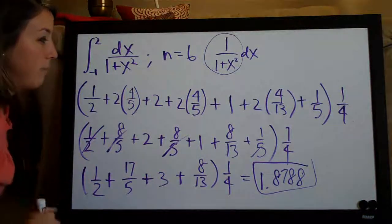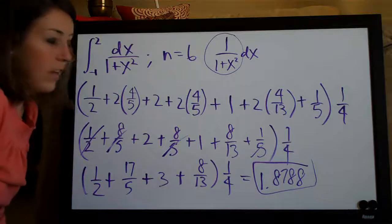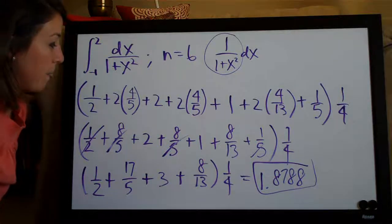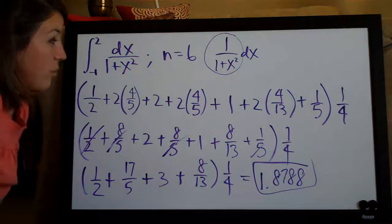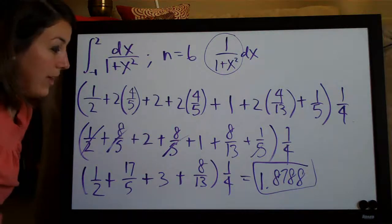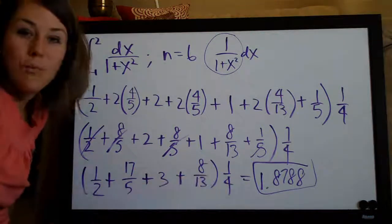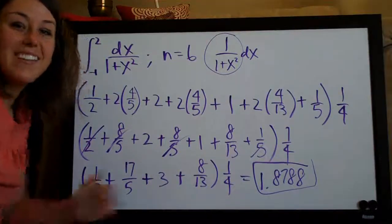So, I know maybe a little bit confusing, a lot of stuff written on the board but, that is basically in a nutshell how you apply the trapezoidal formula and your final answer is 1 point 8, 7, 8, 8. Thanks guys! See you next time!